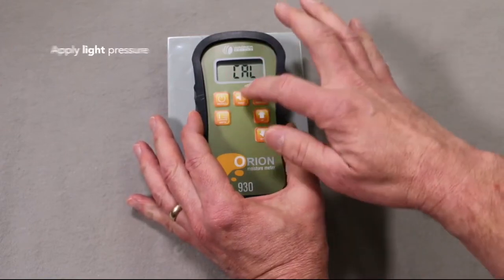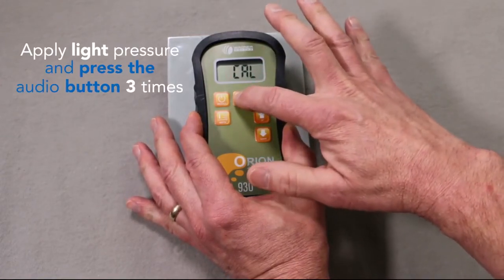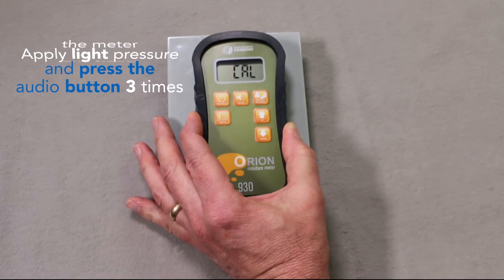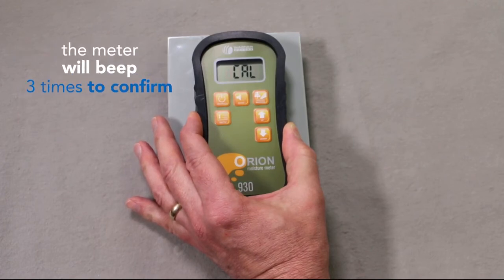Apply light pressure and push the audio button three times. The meter will beep three times to confirm the calibration process.